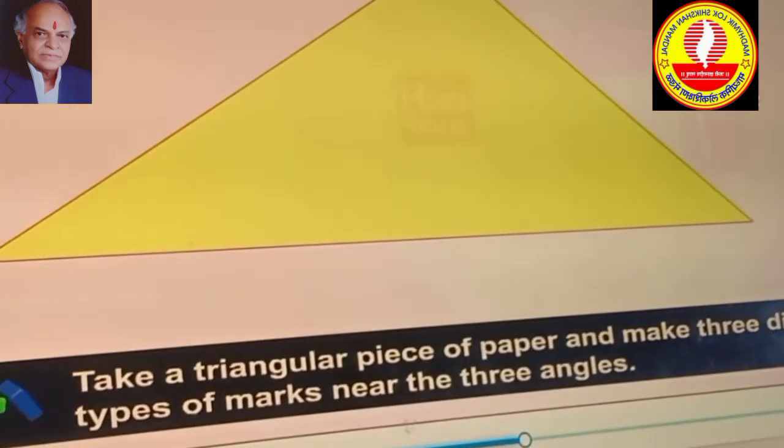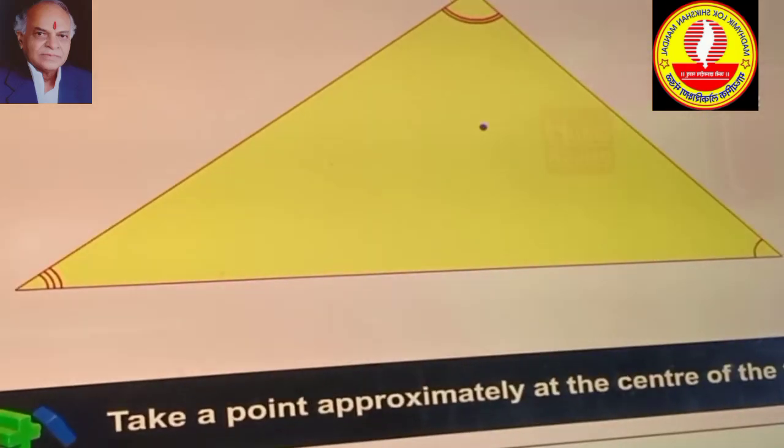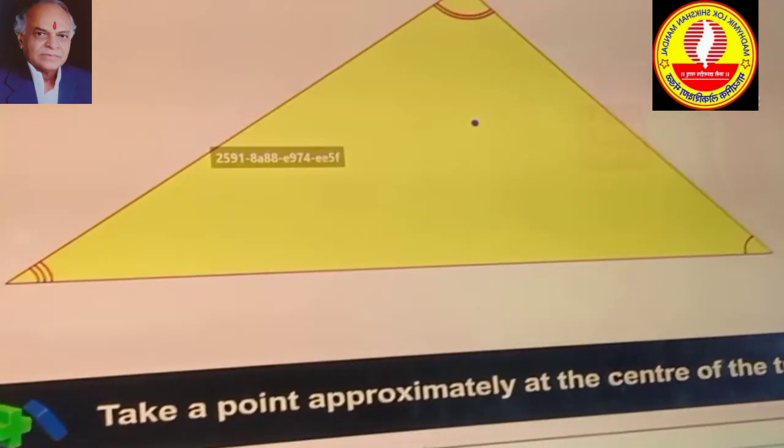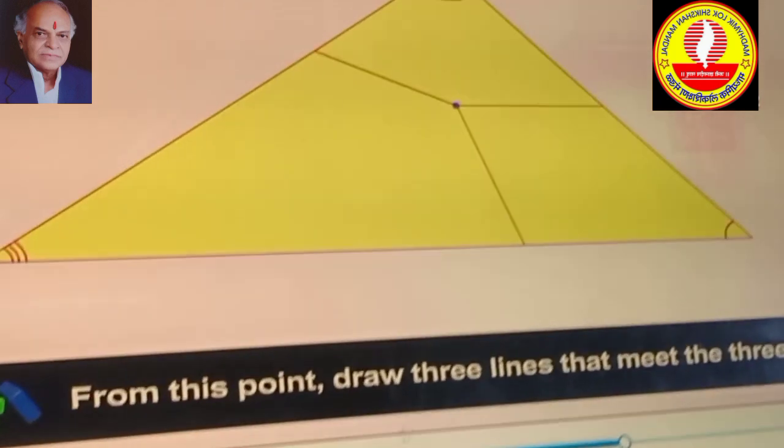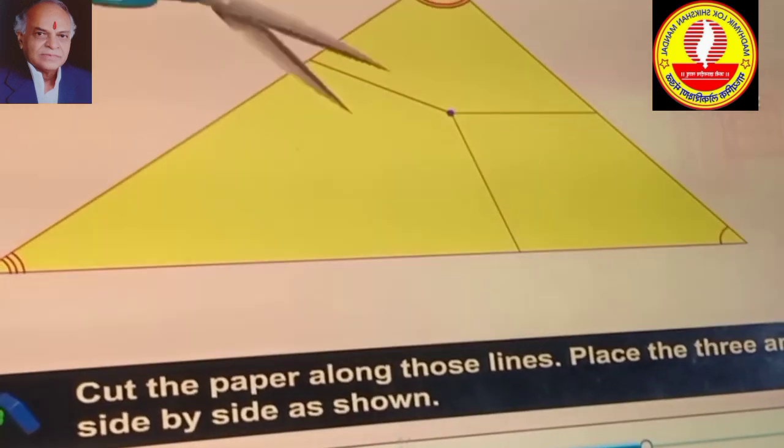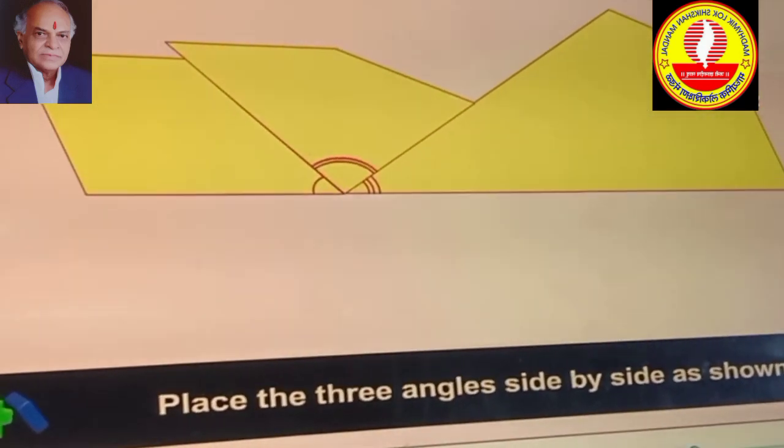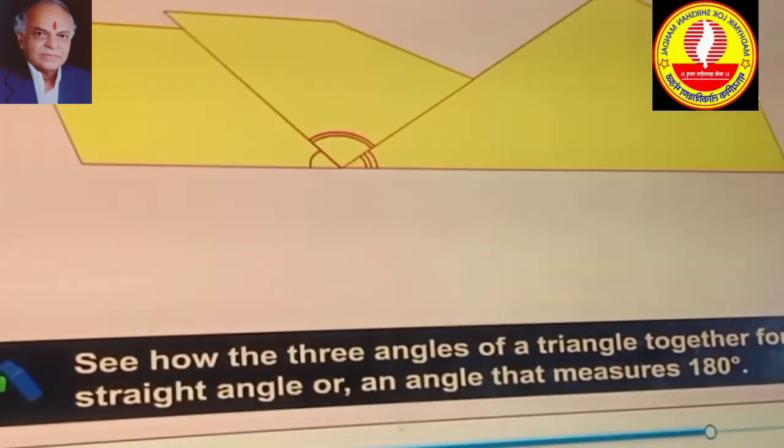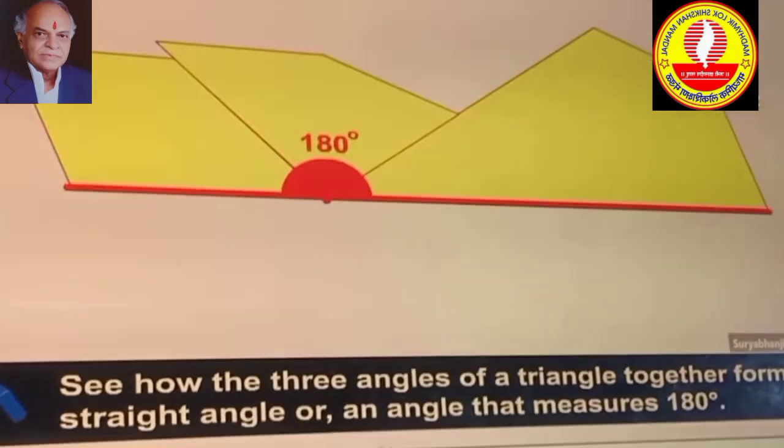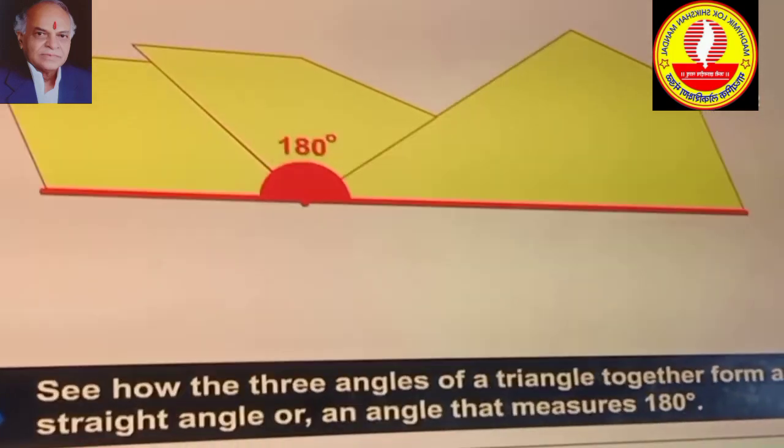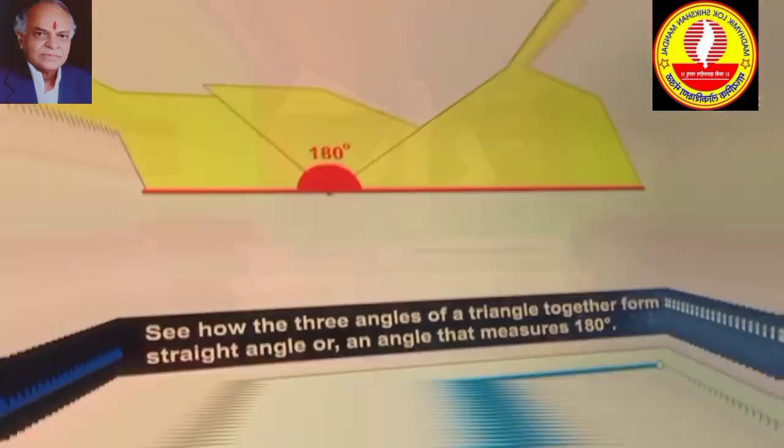Activity 2. Take a triangular piece of paper and make three different types of marks near the three angles. Take the point approximately at the center of the triangle. From this point, draw three lines that meet the three sides. Cut the paper along those lines. Place the three angles side by side as shown. See how the three angles of a triangle together form a straight angle or an angle that measures 180 degrees. The sum of the measures of the three angles of a triangle is 180 degrees.